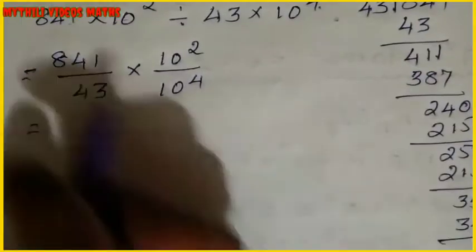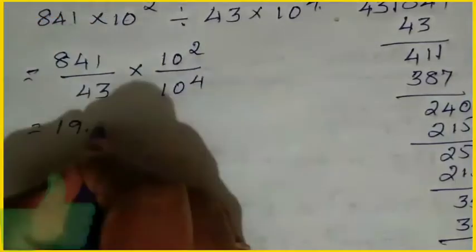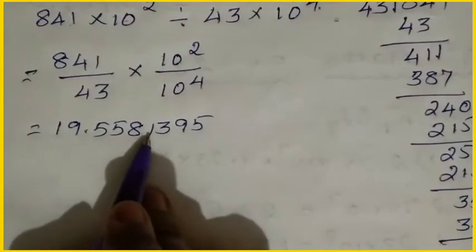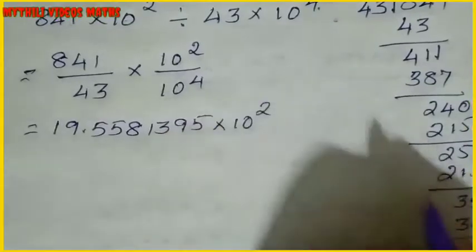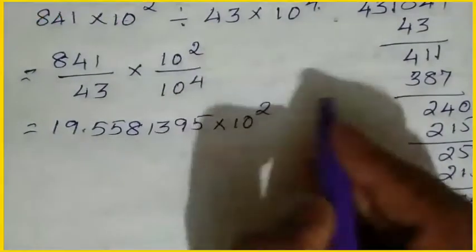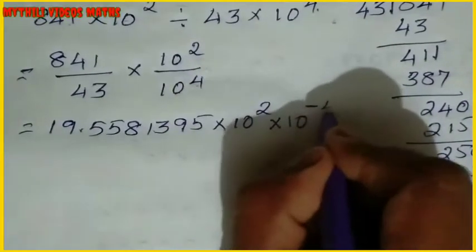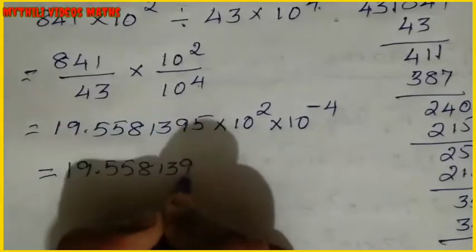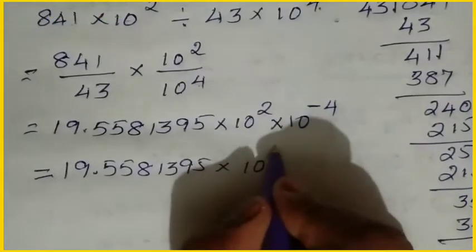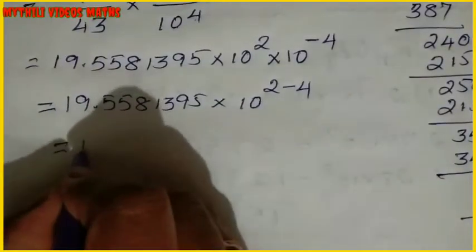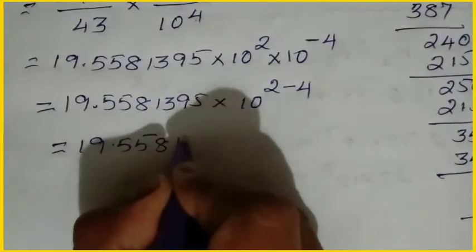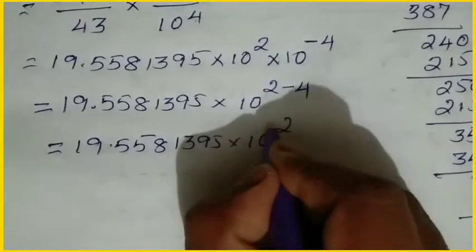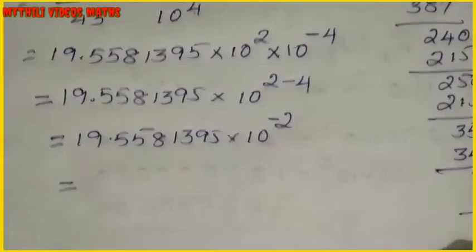So dividing gives 19.5581395. Now write it with the powers: numerator 10 power 2 over denominator 10 power 4. This term equals 19.5581395 into 10 power 2 minus 4, which is 10 power minus 2.